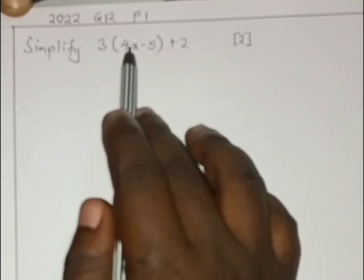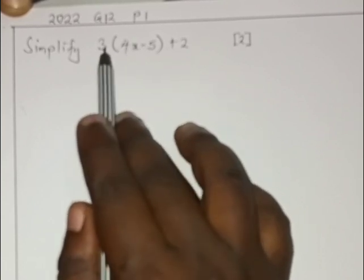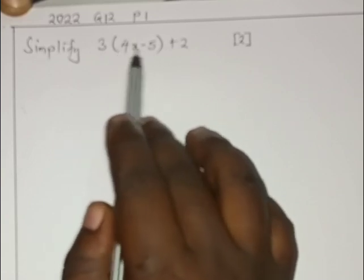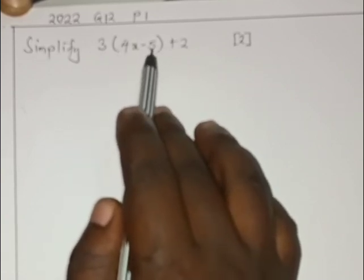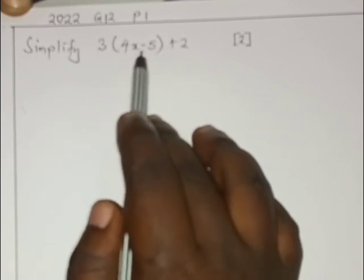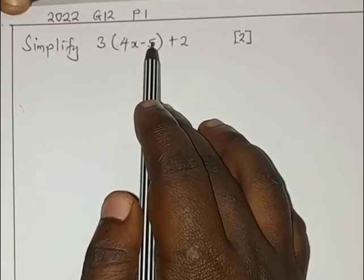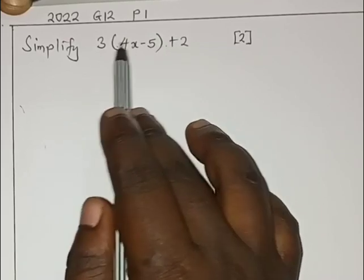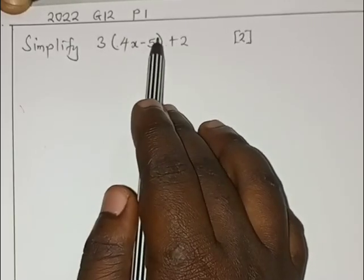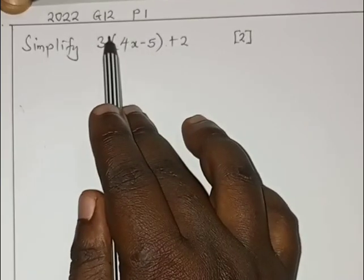In a situation whereby you are given a question that involves brackets, that is your starting point. You have to get rid of the brackets first and then you simplify. To get rid of these brackets, it's not a matter of just throwing them, no, you have to multiply.